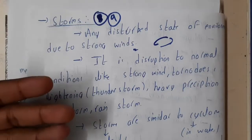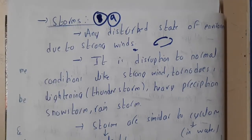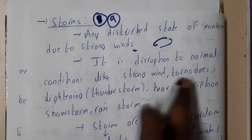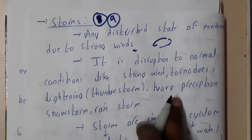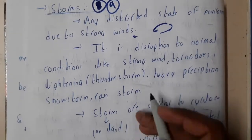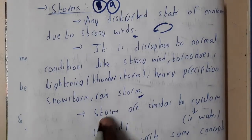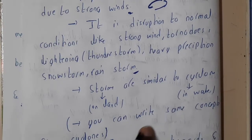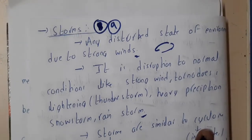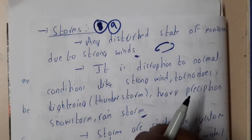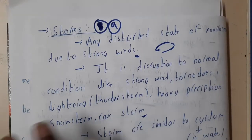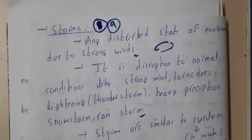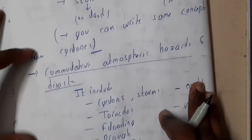A storm in water, ocean, or sea is nothing but a cyclone. It is a disturbance to normal conditions, like strong winds, tornadoes, lightning, thunders, and heavy rains. Storms on land are similar to cyclones in water — whatever we discussed in cyclones can be applied to storms as well, because the same speed and the same effects will be there.